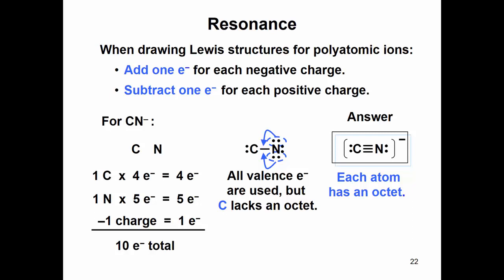You need to, if it has a negative charge, you need to add one electron for the total number of valence electrons when you are adding those up.